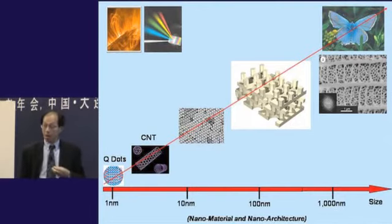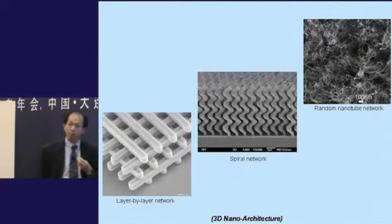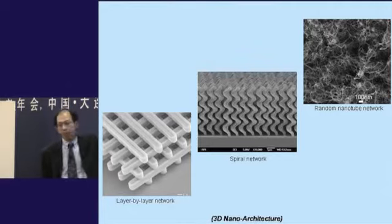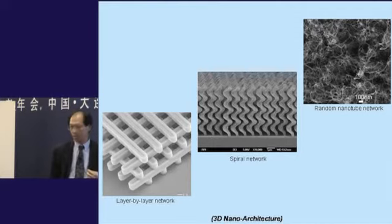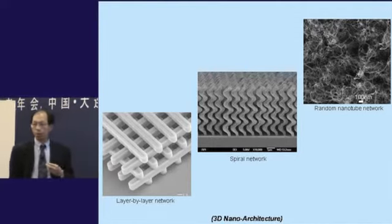Over the last decades we have created many of these complex structures, such as the layer by layer network I show here, the spiral structures I show there, a very non-periodic randomized structure I show there. So it is a very impressive structure we're able to create.